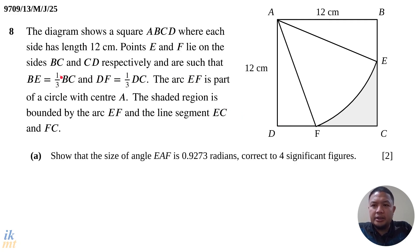And are such that BE is one-third BC and DF is one-third DC. So here it means that the length from B to E is one-third of the entire length of that side. Since the side BC is 12, one-third of that would be 4 for BE, and also the same ratio for DF.